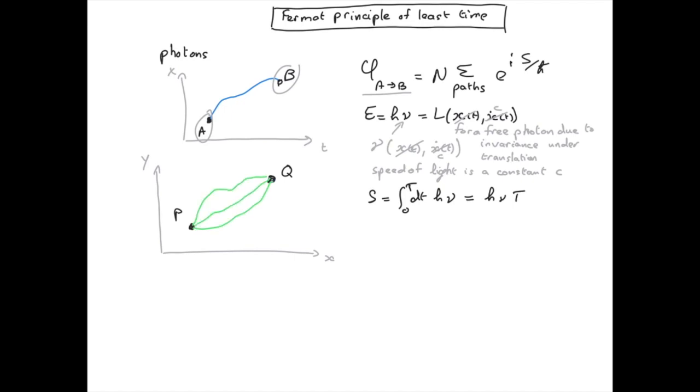And instead of one photon, we imagine we have a continuous beam of photons going from p to q. So for instance in p you have a lamp shining and in q you have your eye collecting the photons coming from the lamp.